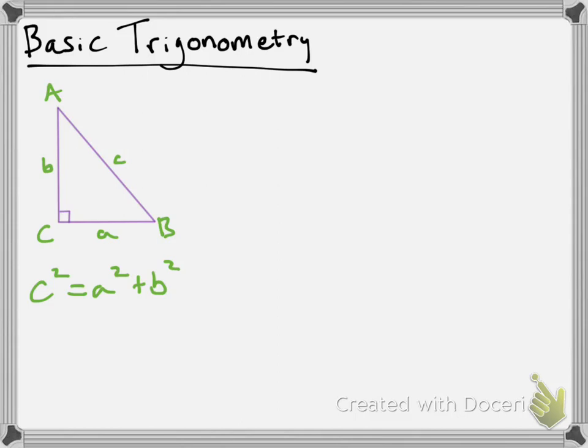Let's say that I have a 50-degree angle here, and I wanted to know what angle A was. I know angle C is 90 degrees and angle B is 50 degrees, and I want to know angle A. If you remember that a triangle has three angles that add up to 180 degrees, angle A equals 180 degrees minus 90 degrees minus 50 degrees, which gives us 40 degrees.